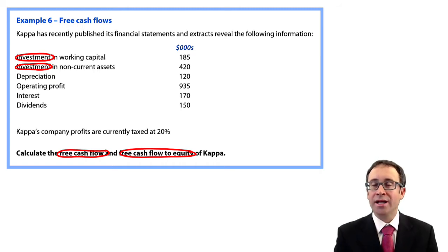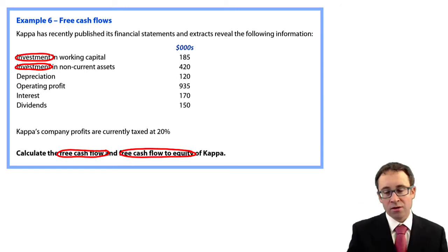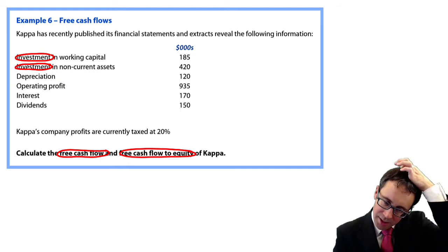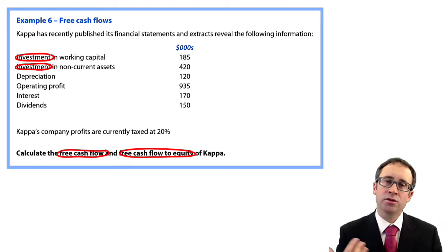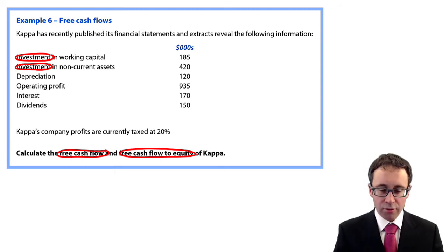You've got your depreciation, which again is a non-cash item that will add back to the profits. You're given your operating profit of 935, so that's where we will start in a moment. And then you've got interest and dividends. We might need to look at those when we're making any adjustments as we go through.